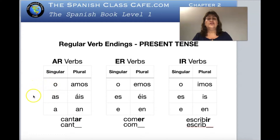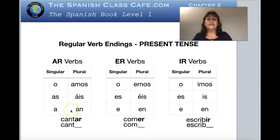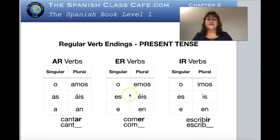Let's recap: yo canto, tú cantas, él canta, ella canta, usted canta, nosotros cantamos, vosotros cantáis, ellos cantan, ellas cantan, ustedes cantan. Now with comer — take the -er out: yo como, tú comes, él come, nosotros comemos, vosotros coméis, ellos comen, ellas y ustedes comen.